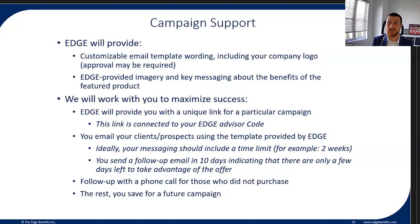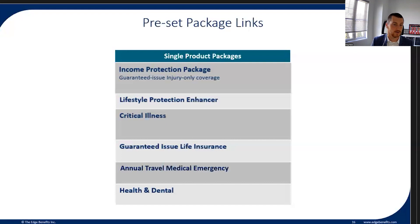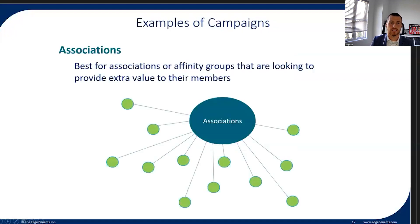If you don't get a chance to connect with a client or there's someone you didn't want to contact, you save them for a future campaign. You can set up a link specific to a product — for example, a disability link, a critical illness link, a health and dental link — and gear those toward specific parts of your client base or market them on social media. This allows you to have multiple campaigns over time and even repeat a campaign later down the road.